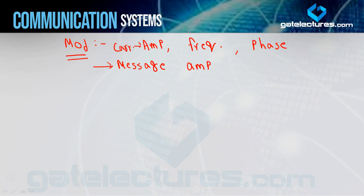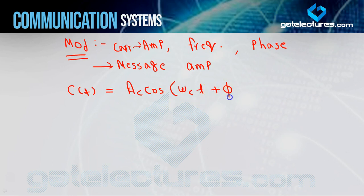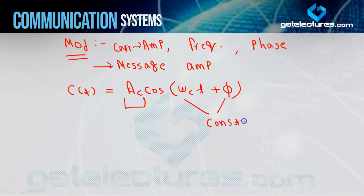Suppose your carrier signal is: c(t) = AC cos(ωC t + φ). Because of the message signal amplitude variation, if AC and ωC are constant and only the amplitude varies, we call it amplitude modulation. If ωC varies, we call it frequency modulation.